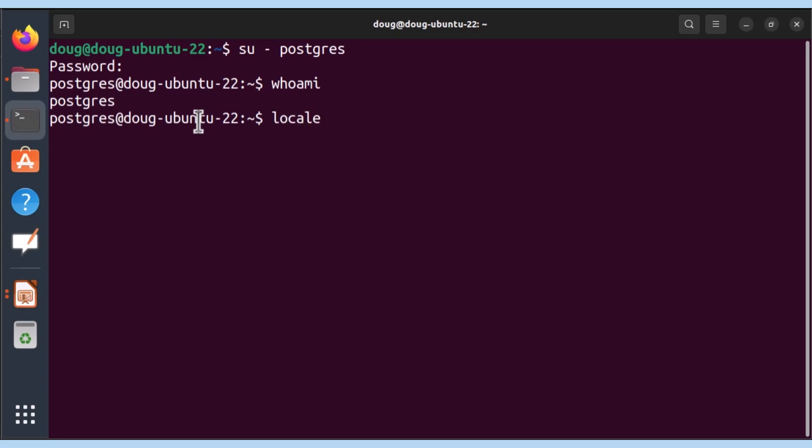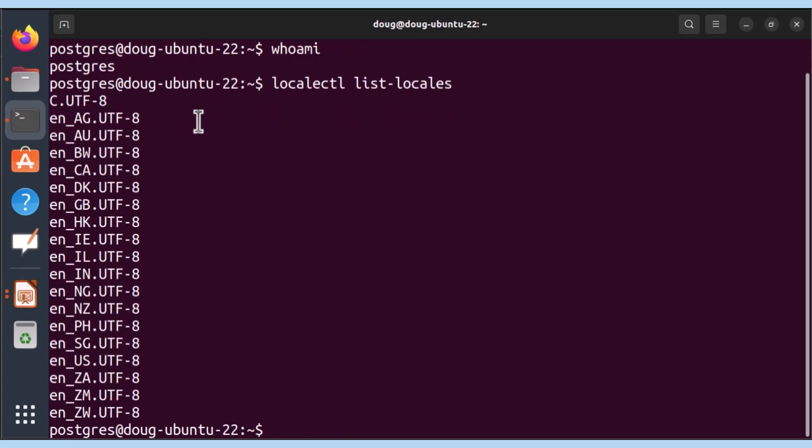let's list our locales. This will vary by each flavor or distro that you might have. So, notice we have English, AG, UTF, all UTF-8s. But you have AG, AU, BW, CA, DK, different types of English variations by locales.